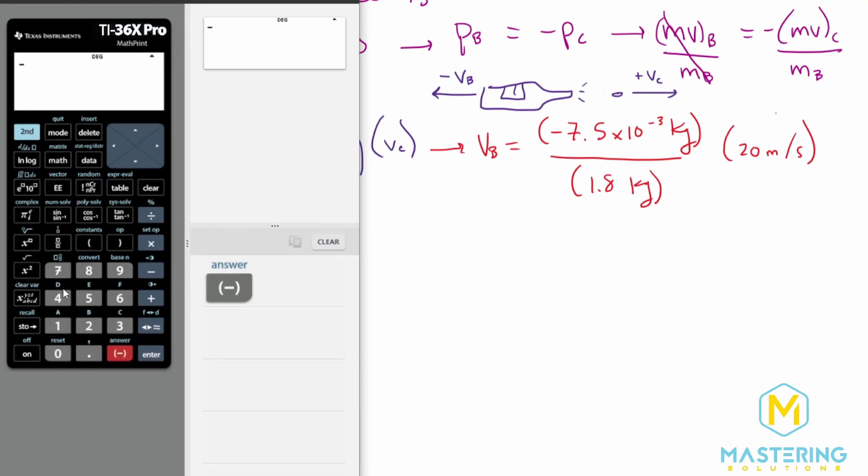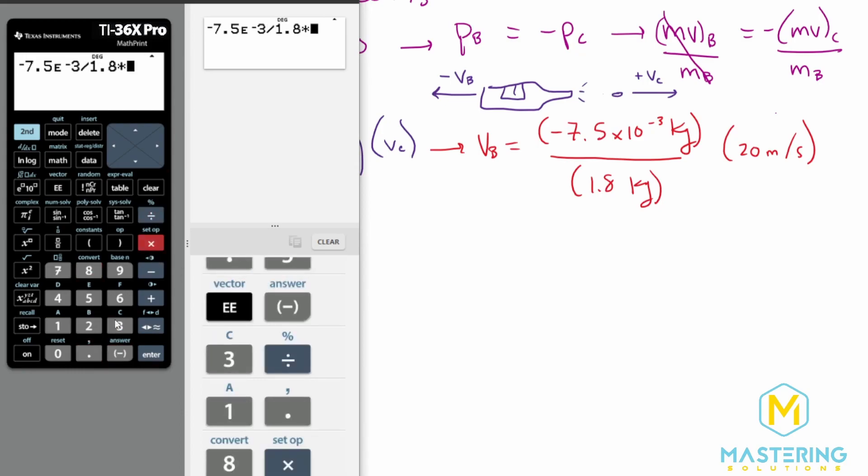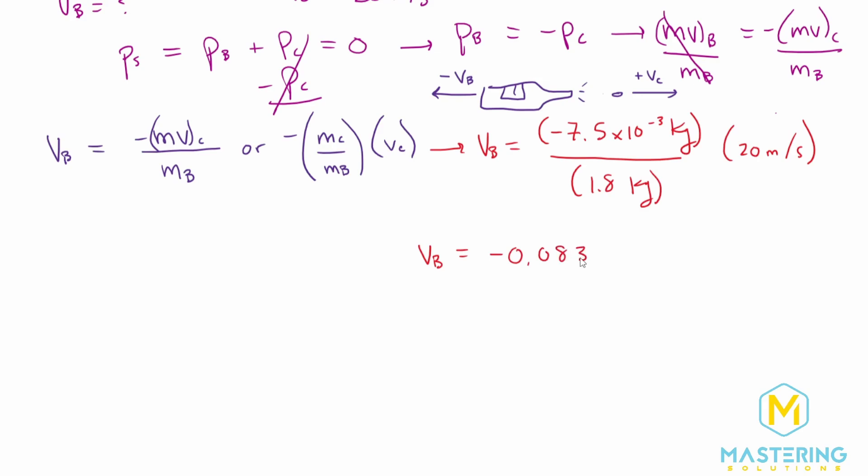When we calculate this, we get negative 8.3 times 10 to the negative 2 meters per second. And that is the final velocity of the champagne bottle after the recoil.